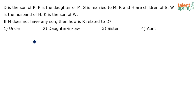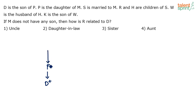A question from blood relations — let us take it up. Let's draw the family tree. D is the son of P, meaning D is a male child of P. P is the daughter of M, meaning P is a female child of M.